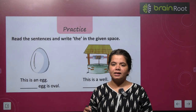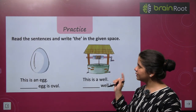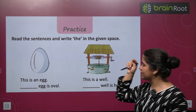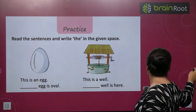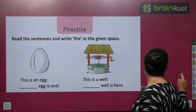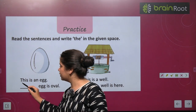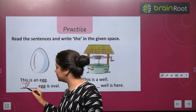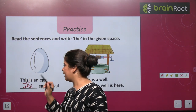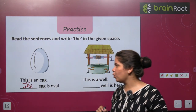So, how do we use the? When we point to something, we say this is an egg. The — T-H-E — the egg is oval.